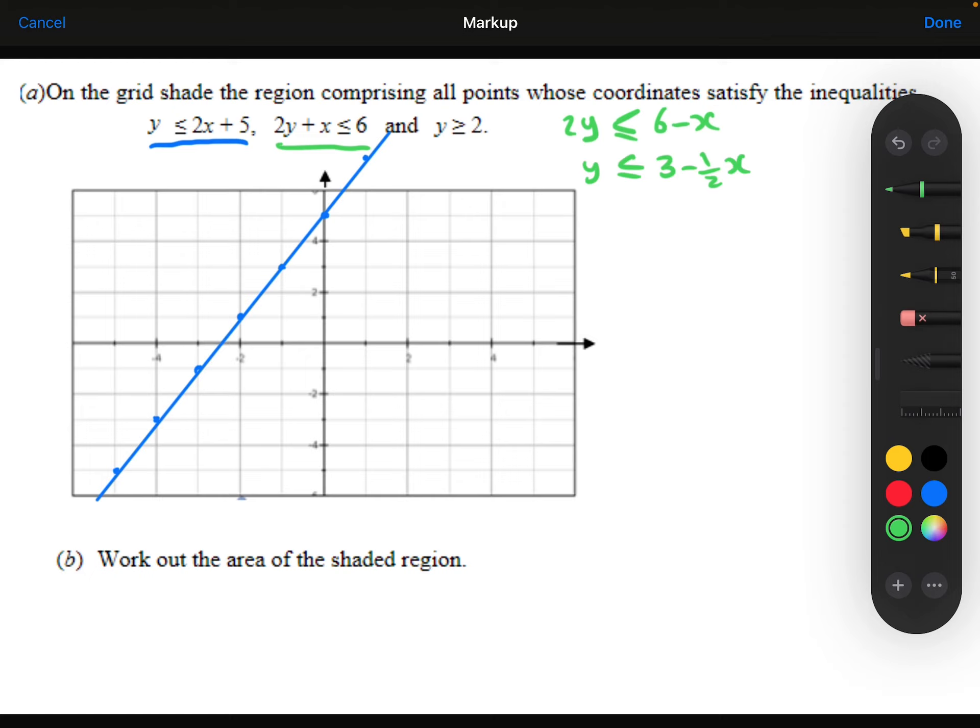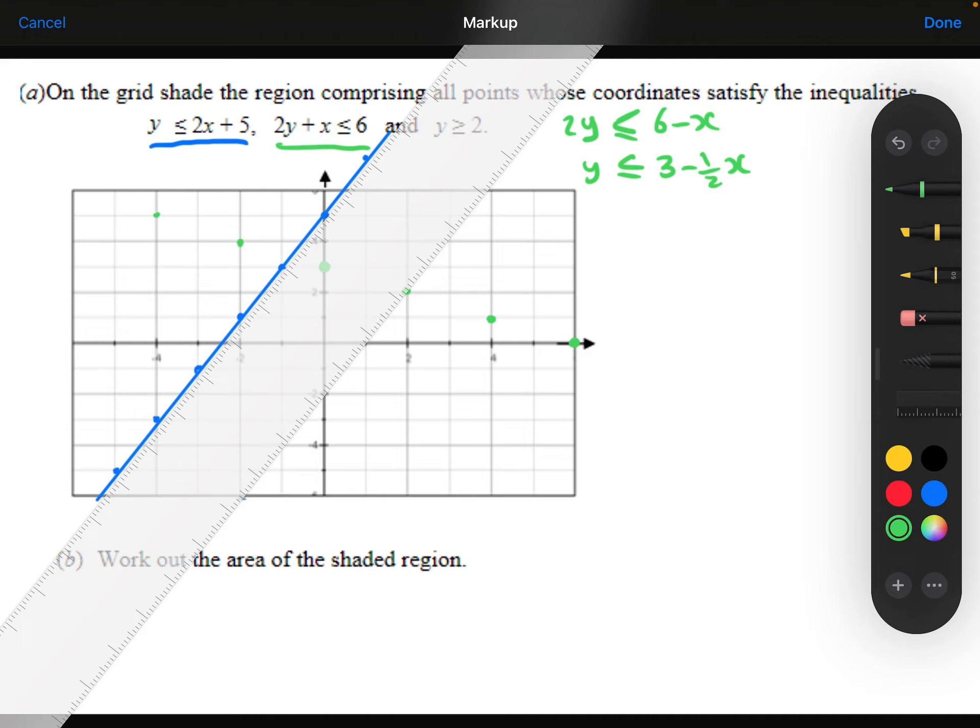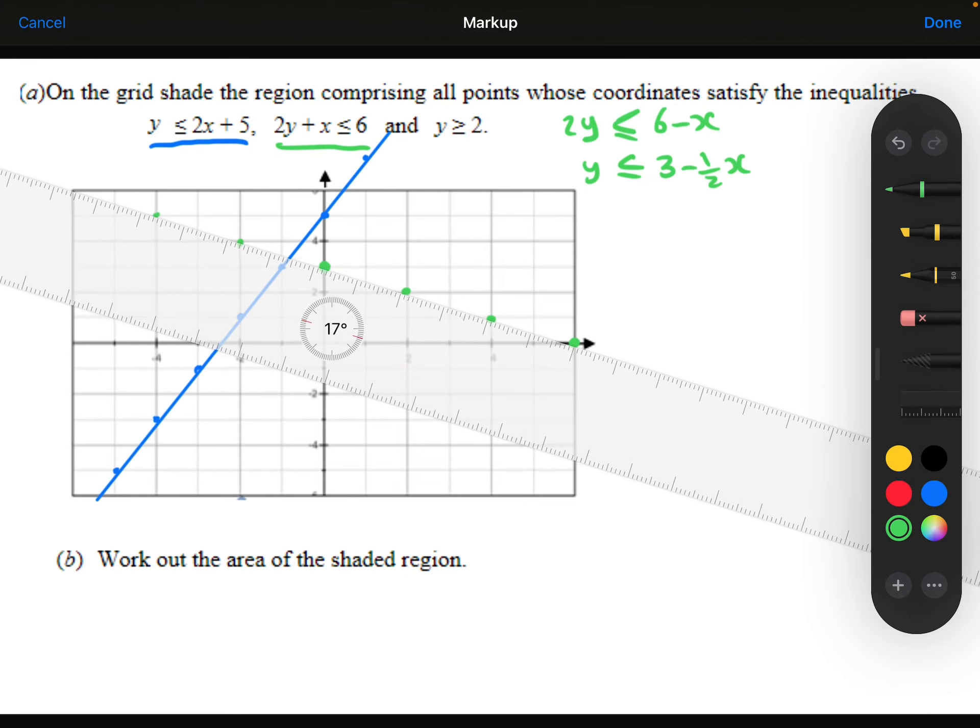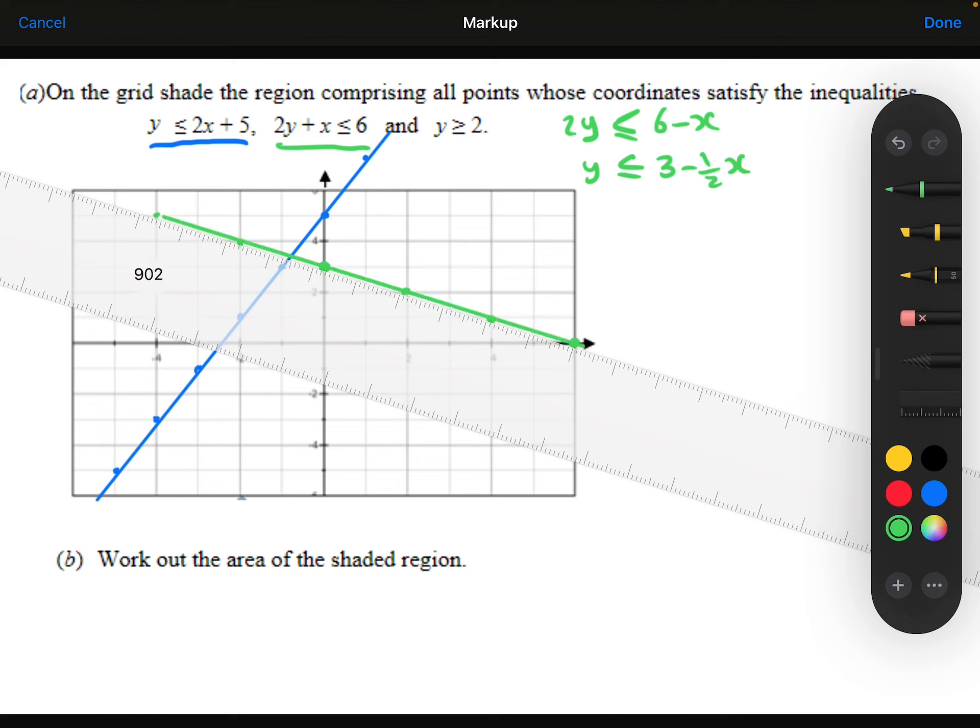So it's got a y-intercept of 3, a gradient of minus 1 half. So that means along 2, down 1, along 2, down 1, along 2, down 1. So that's going to look something like that.